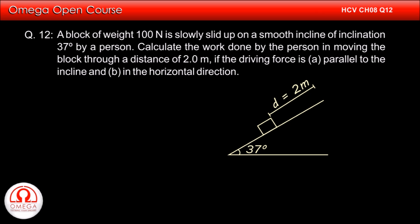To calculate the increase in potential energy, we need to find the height by which the block rises when moved 2 meters up along the incline. As you can see, the height gained by the block is 2 sin 37 degrees. Putting sin 37 degrees as 3 by 5, we get the increase in height is equal to 1.2 meters.